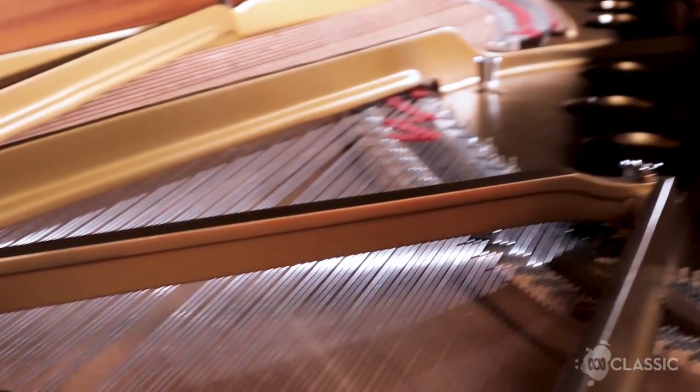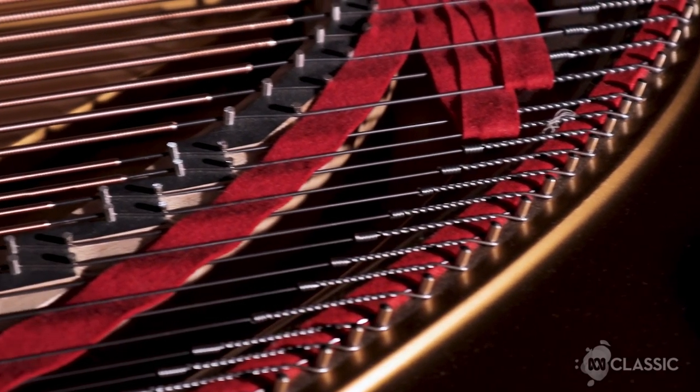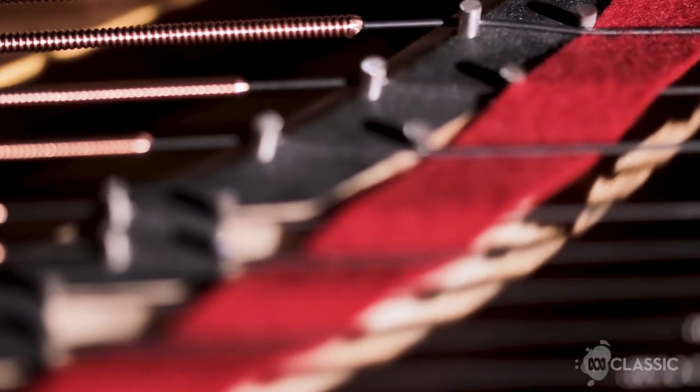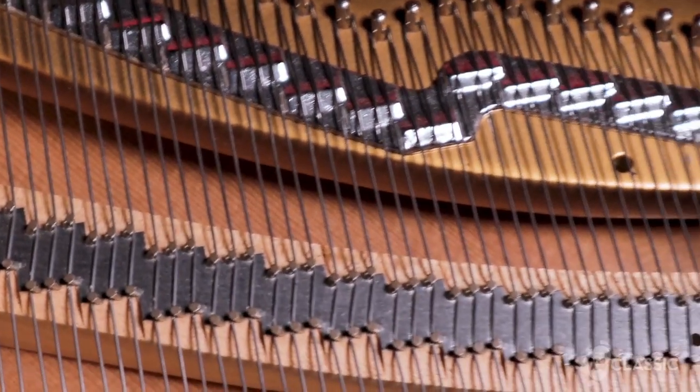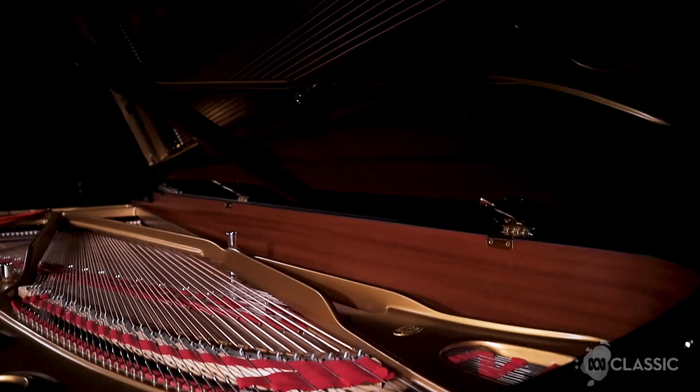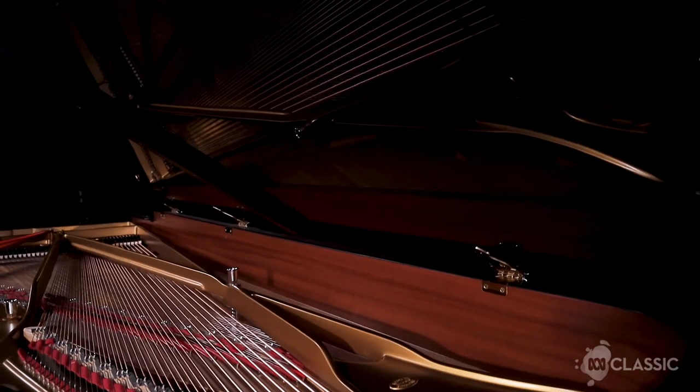If the piano only had one string for each note it would sound quite muted and quite dull. The three strings interact with each other to give a nice clear tone. Strings are made out of high carbon steel. The bass strings are usually covered with copper in order to make them heavier and slow the vibrations down. In most grand pianos you find that the strings have crossed, and this gives a longer length of string for the size of the piano and also gives a better average tension on the frame.